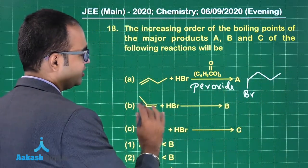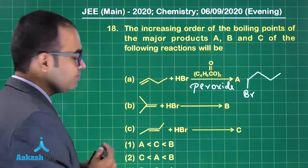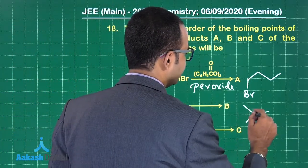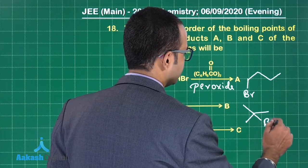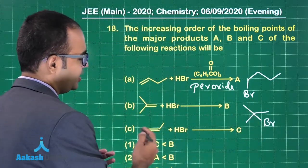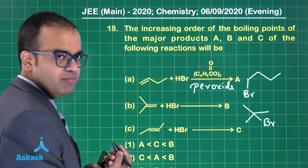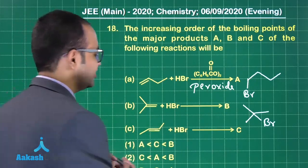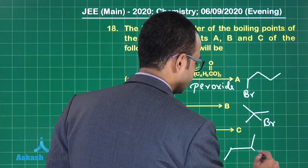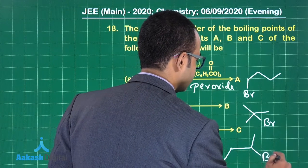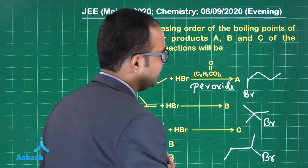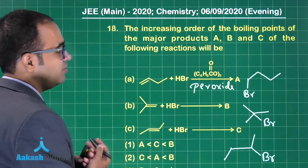For product B, we are adding HBr without peroxide, so Br will go on the second carbon. For product C, we are also adding HBr — Br can go anywhere because it's a symmetrical alkene, giving product C.